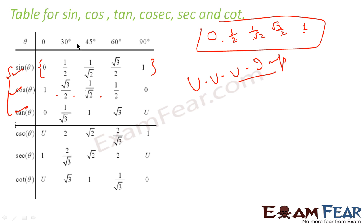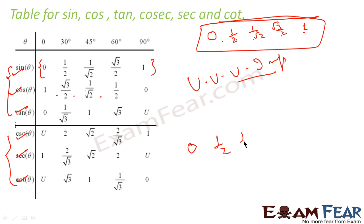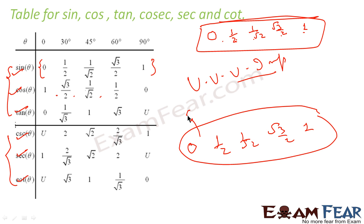If you have sin, you can get cosec, because 1 by sin is cosec. If you have cos, you can get sec. If you have tan, you can get cot. The only thing you need to remember is this value sequence: 0, 1 by 2, 1 by root 2, root 3 by 2, and 1 — for 0°, 30°, 45°, 60°, and 90°.